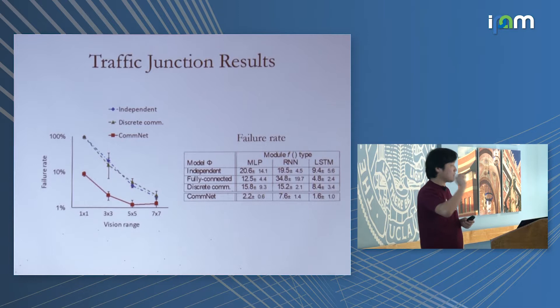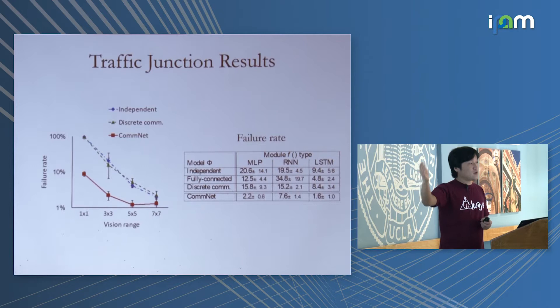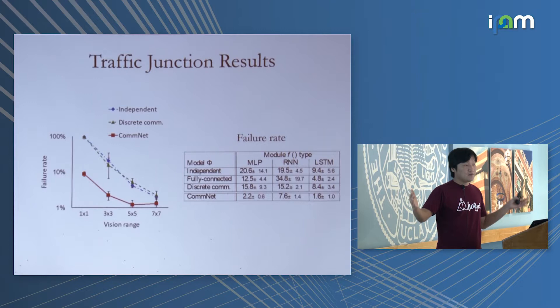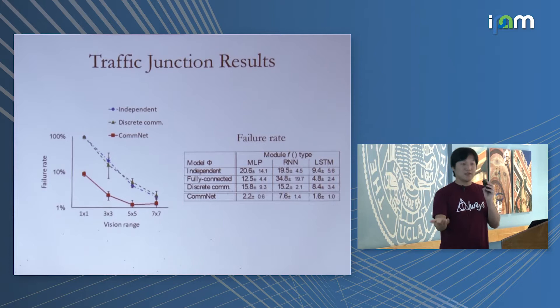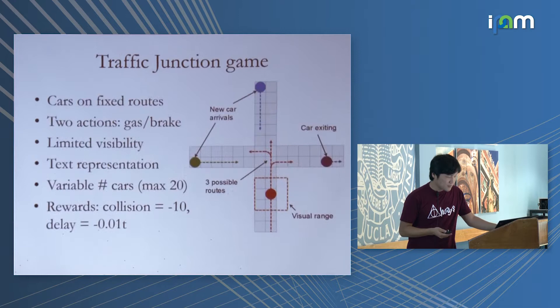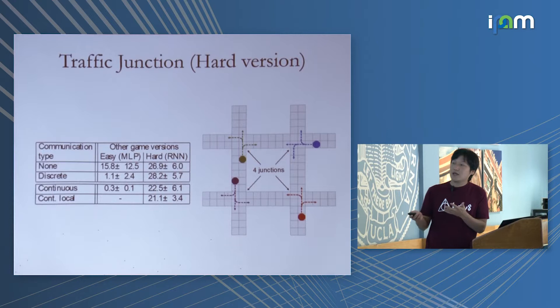Without communication and with blind cars, there are many collisions. Allowing discrete symbol communication doesn't work well even using the REINFORCE gradient estimator. A fully connected neural network controlling all cars also doesn't work because it doesn't respect permutation invariance. The continuous communication model gets the result we expected.